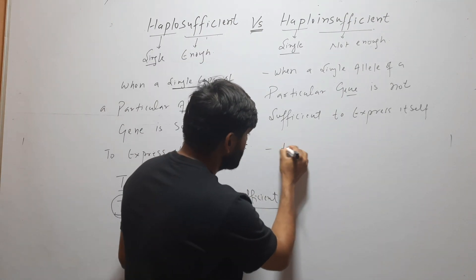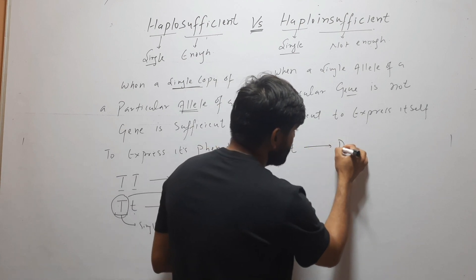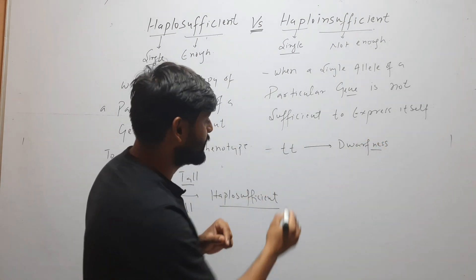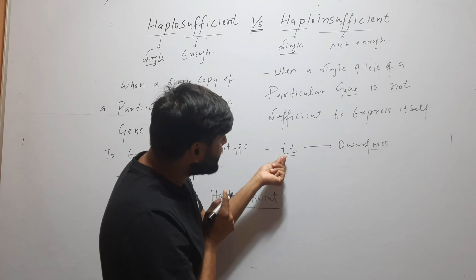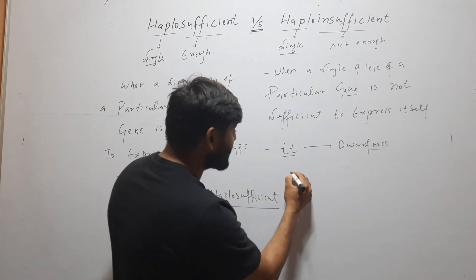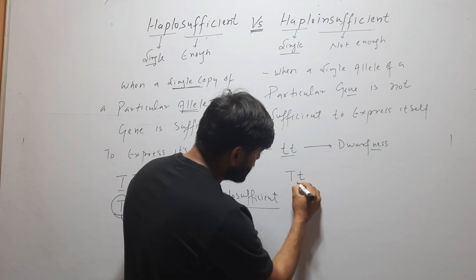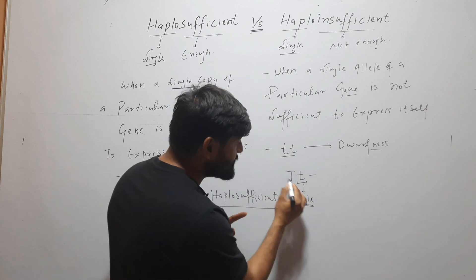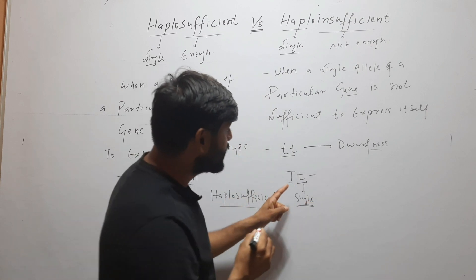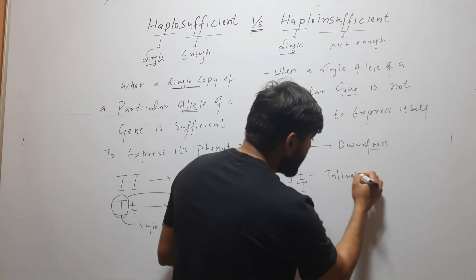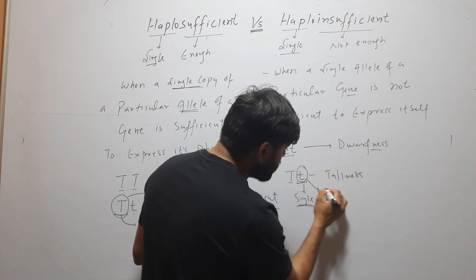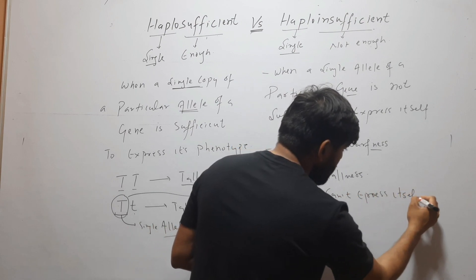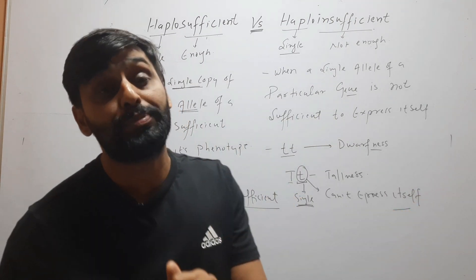Suppose here I am taking the example small t and small t — it is causing dwarfness. So here you can see that two alleles are present and when two alleles are present they are expressing itself. But when the condition is capital T and small t, here you can see that small t is a single allele, and in that case the phenotype will be tallness. So here this allele cannot express itself because a single copy of it is present.